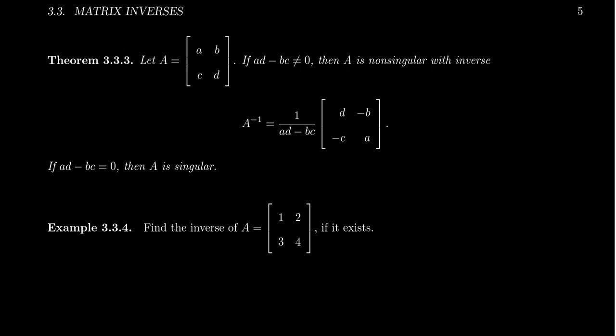So how can we determine whether a matrix is non-singular or not? In the two-by-two case, there's a very simple formula you can use. If you have a matrix A with entries A, B, C, D, then we can determine whether the matrix is non-singular or singular by computing the number AD minus BC. This number is commonly referred to as the determinant of the matrix A. If this number is non-zero, that determines the matrix is non-singular. And if AD minus BC equals zero, the matrix is singular.